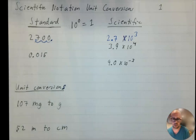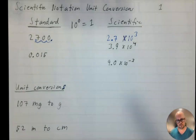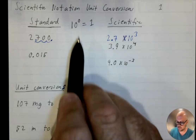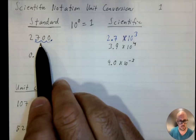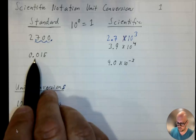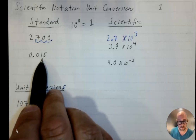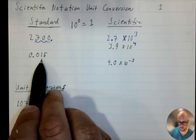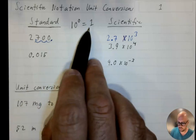I don't play around with moving it left or right or whether it's positive or negative, because I get confused. So I just look and see if it's a big or a small number, and then I move the decimal place based on that. So I'm going to do 0.015 next. That's a small number, because it's smaller than 1.